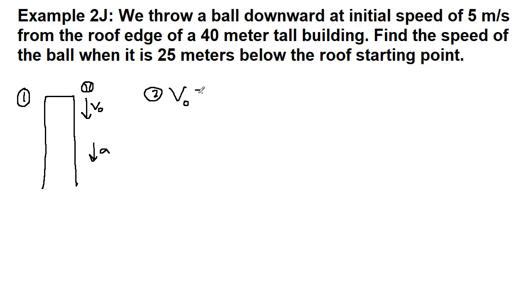So first of all, we're throwing downwards. So let's make sure we really remember that downwards. That arrow tells us that we must have a negative initial velocity, negative 5 meters per second.